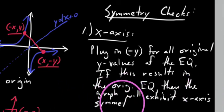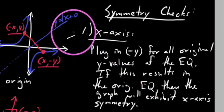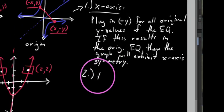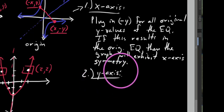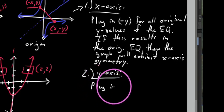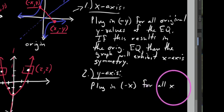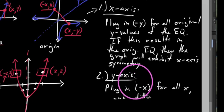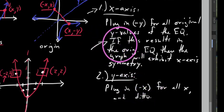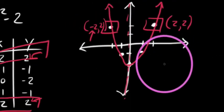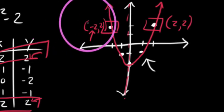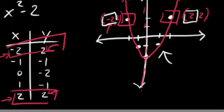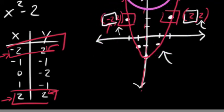Bullet point number two is Y-axis symmetry. To check for Y-axis symmetry, plug in negative X for all X values. If plugging in a negative X for all original X values results in the original equation, then the graph will exhibit Y-axis symmetry. This is the same idea — whether you plug in a negative X or positive X, you're going to result in the same thing you started with, meaning the Y-value yielded is the same regardless.